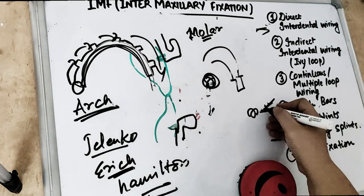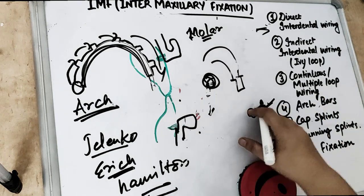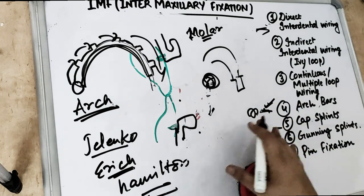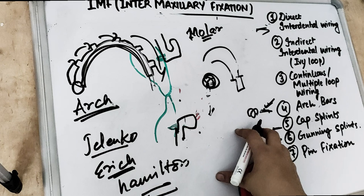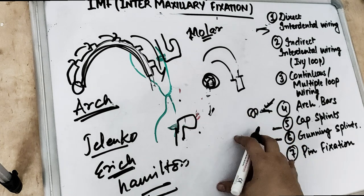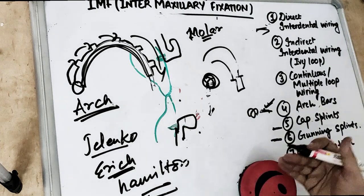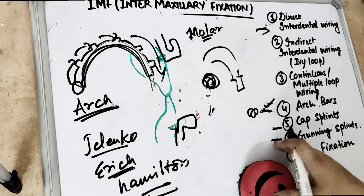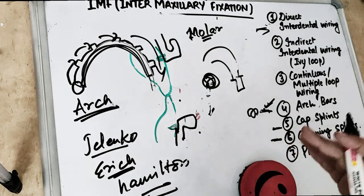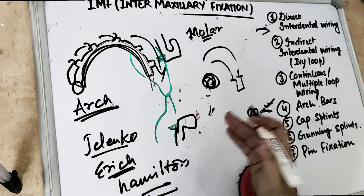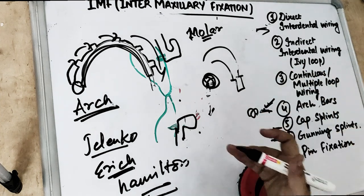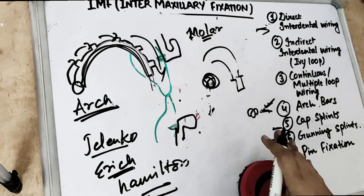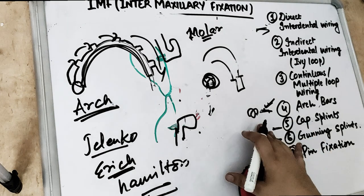Arch bars are very advantageous because they cause less trauma and are not hectic — they are very simple to use. In case of any undisplaced or displaced fracture, such as a body fracture, the arch bar can bridge the fracture line and get the segments into place on either side of the fracture line.